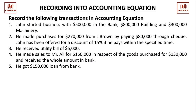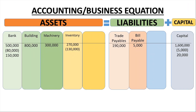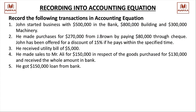Next transaction: a $150,000 bank loan is received. Bank increases by $150,000 on the asset side, and a liability called 'bank loan' or 'other payables' of $150,000 is created on the liability side. Both sides increase equally — the equation remains equal.